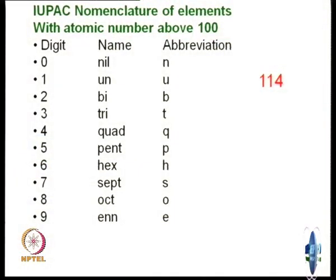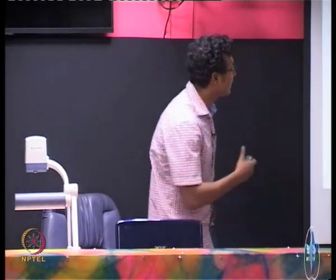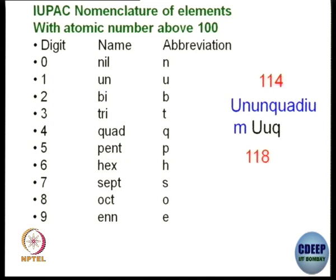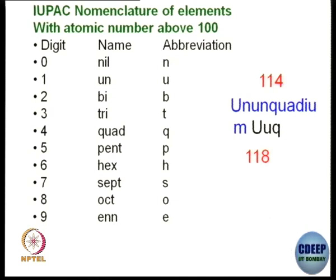The simple IUPAC rule is: 0 is pronounced as nil, 1 as un, 2 as bi, and so on up to 8 as oct, and 9 as n. So for example, if an element has atomic number 114, it should be named un-un-quadium. The symbol would be Uuq. Un is 1, the second digit is another un, quad is for 4, and it ends with -ium. So element 114 should be un-un-quadium.